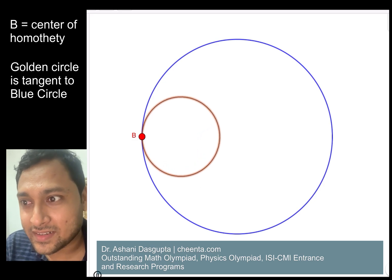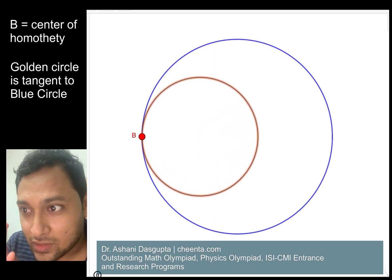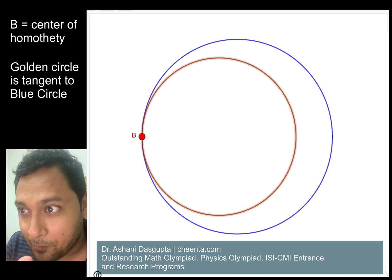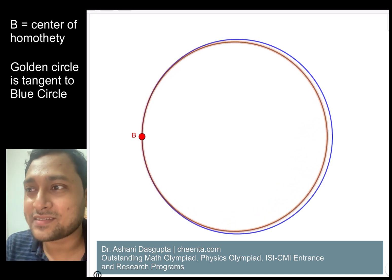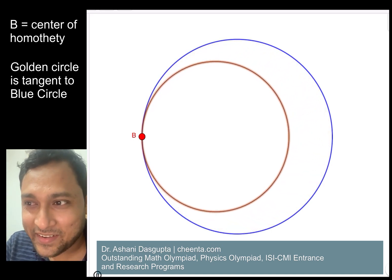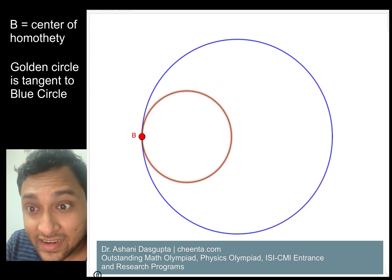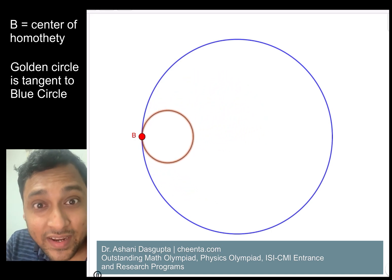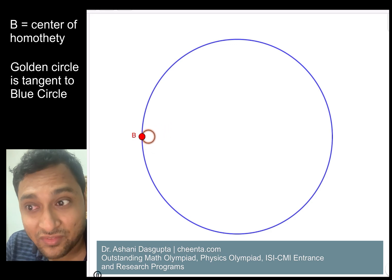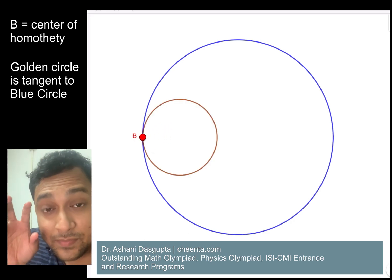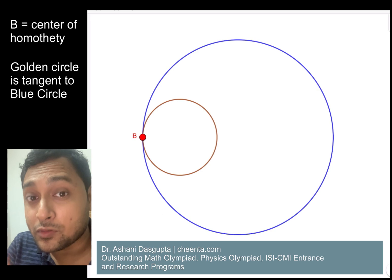And then you can also bulge it down, and once you bulge it down enough it will sort of shrink down to the point B itself. When this golden circle grows into the blue circle, a bunch of things related to the golden circle become the things related to the blue circle.